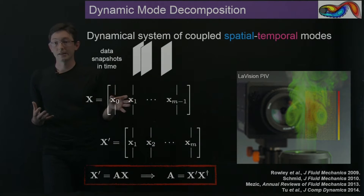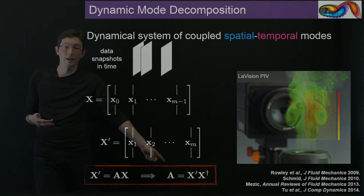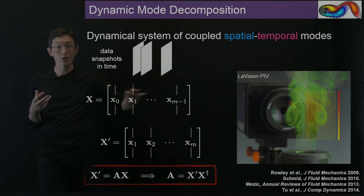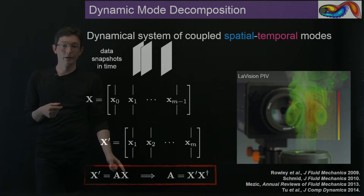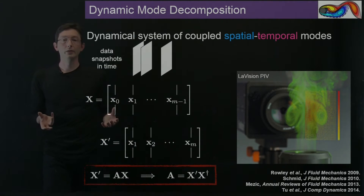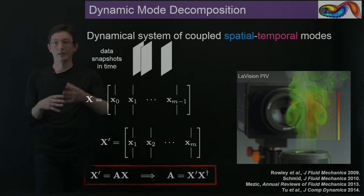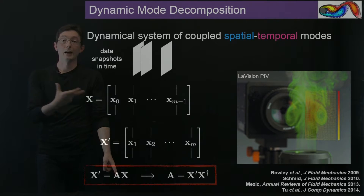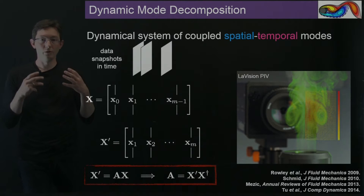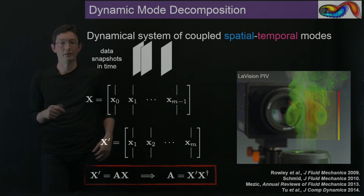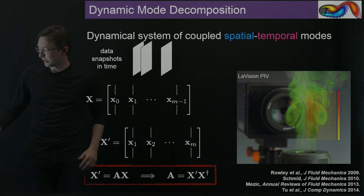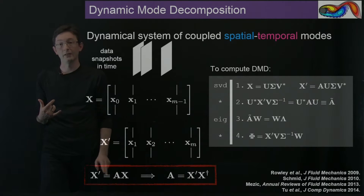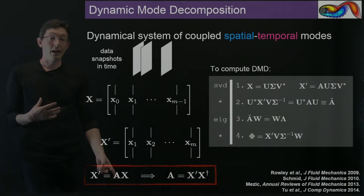Dynamic mode decomposition is interested in finding the leading eigenvalues and eigenvectors of this big A matrix — the best-fit linear operator that tells me how data in X maps to data at a future time step in X prime. If these were reasonably sized matrices, we could use the pseudo-inverse: A equals X prime times X-dagger. But if this is a high-dimensional fluid, climate, or neuroscience system with millions of degrees of freedom, then A would be million-by-million — too large to even represent, let alone do an eigendecomposition to find dominant eigenvalues and eigenvectors. So DMD essentially amounts to an algorithm to find these leading eigenvalues and eigenvectors without ever computing A.